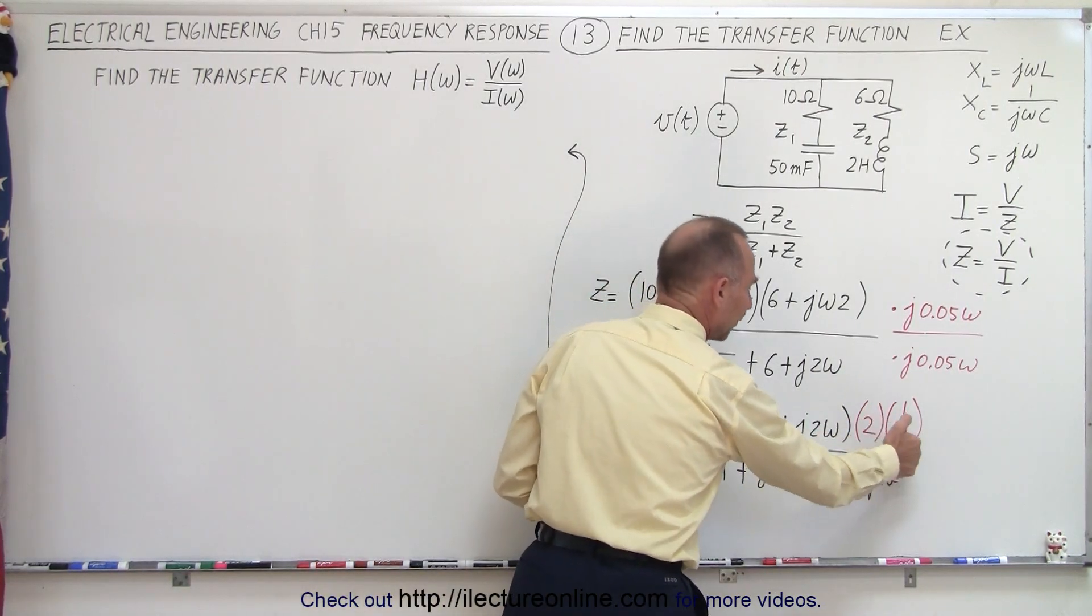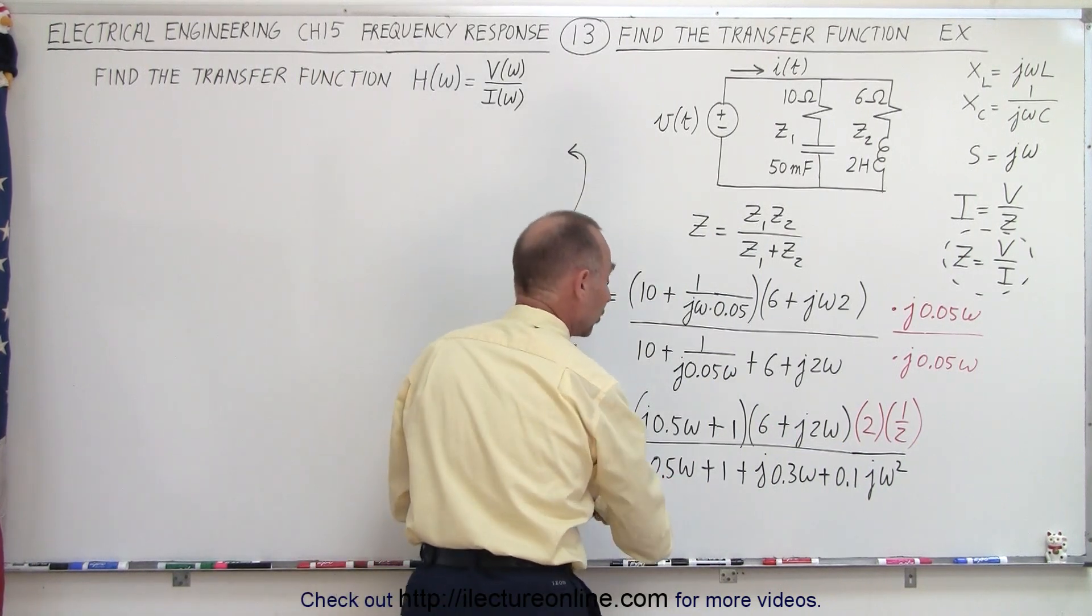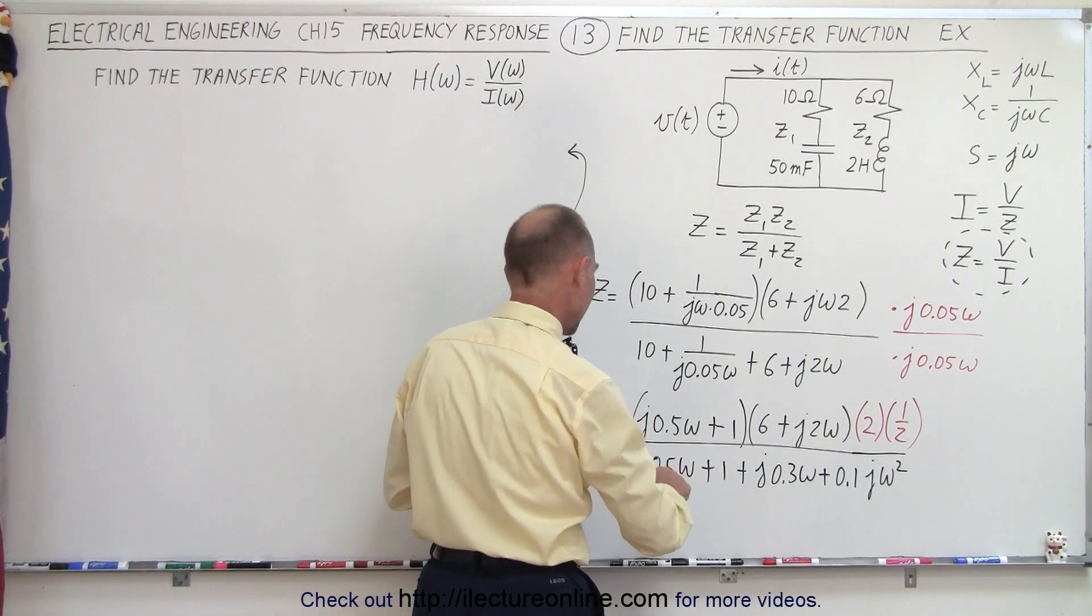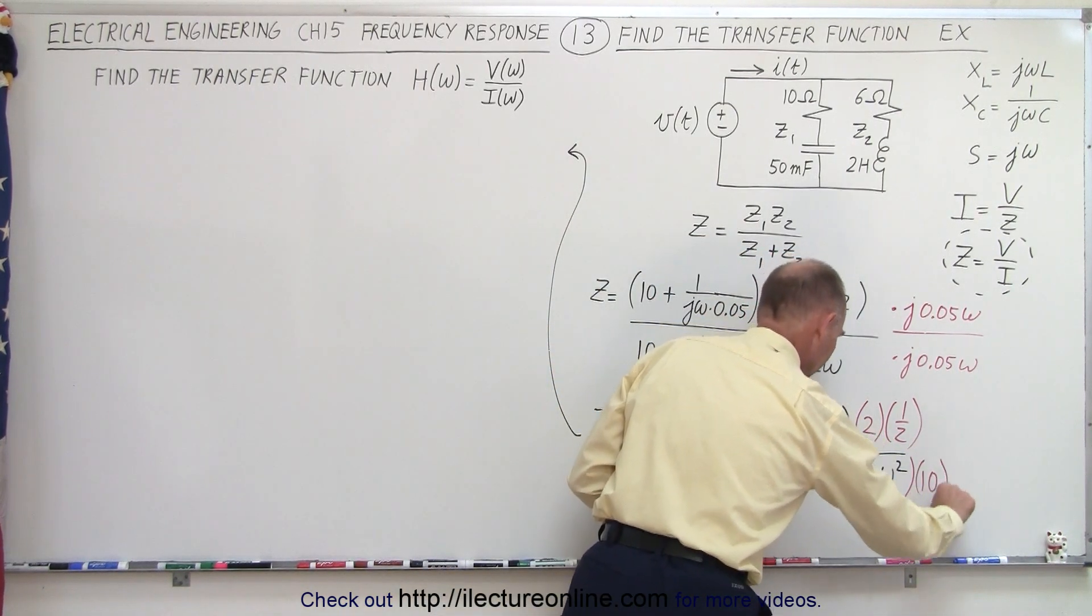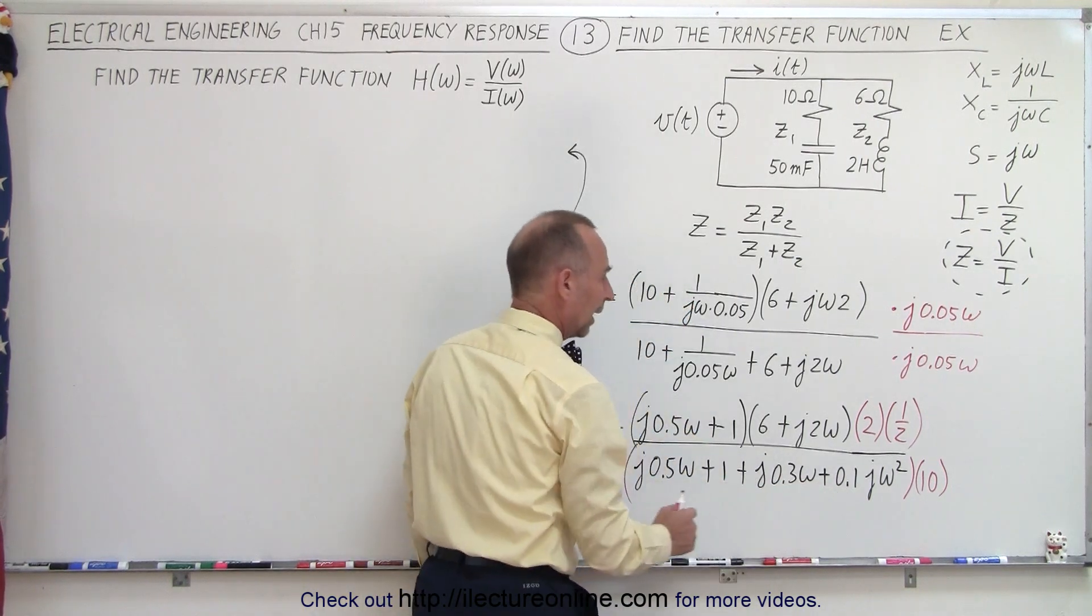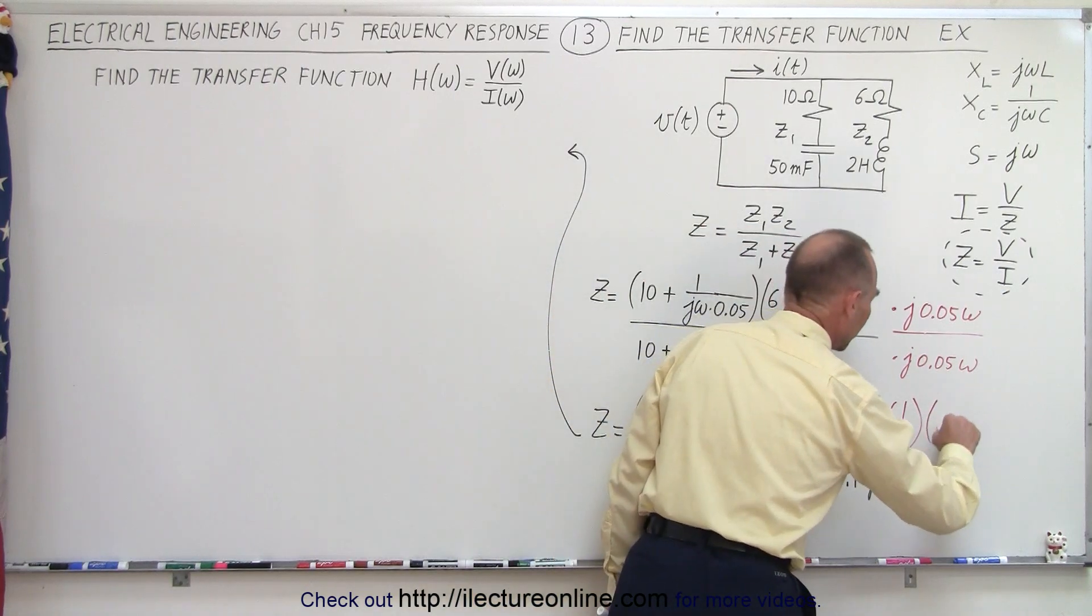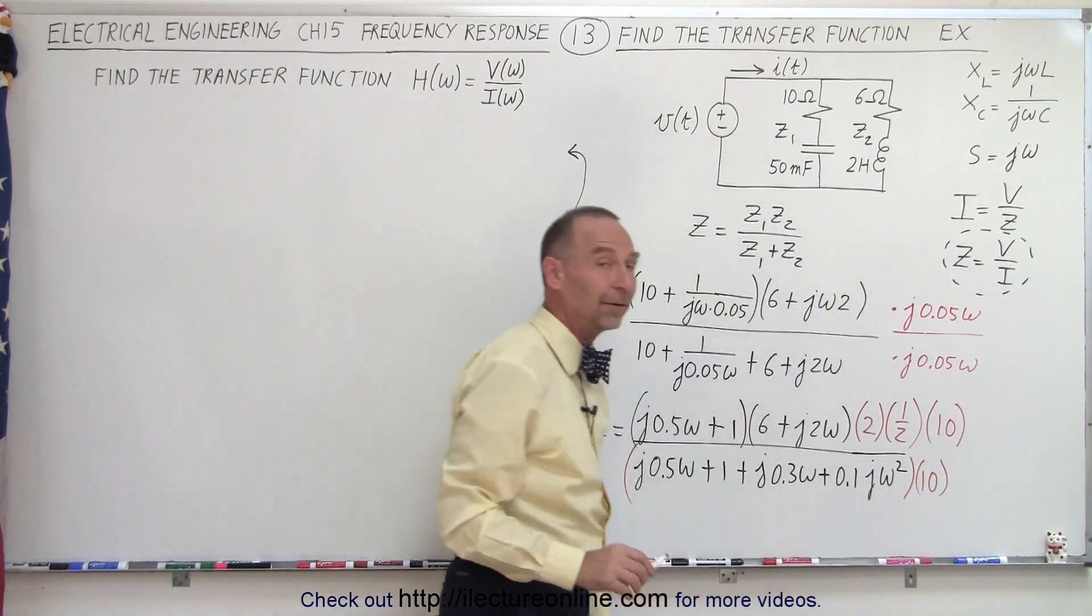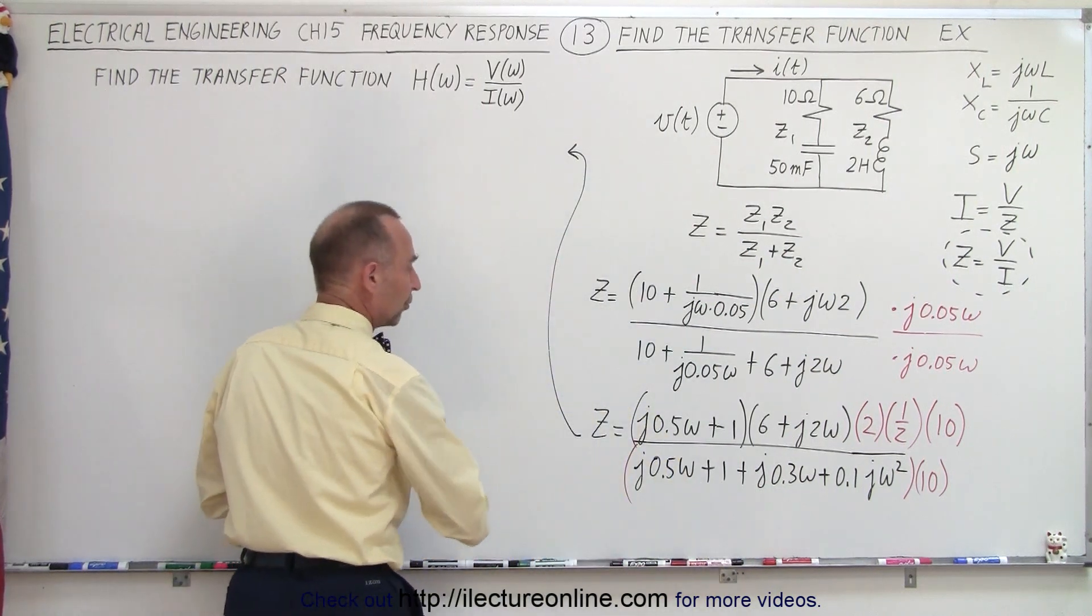And since I'm multiplying by 2 and dividing by 2 at the same time, I'm not changing anything at all. And then here, I'm going to multiply everything by 10, because that way I get rid of the decimal places. And the 0.1 will then become a 1. And if I multiply the denominator by 10, I must multiply the numerator by 10 as well. So, a few adjustments here to make things look a little bit better.